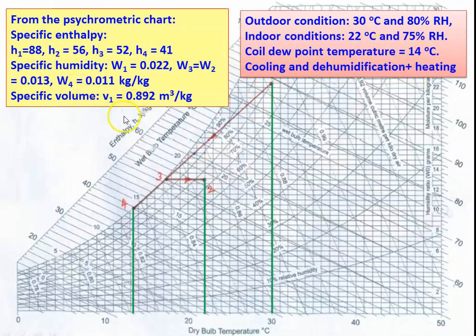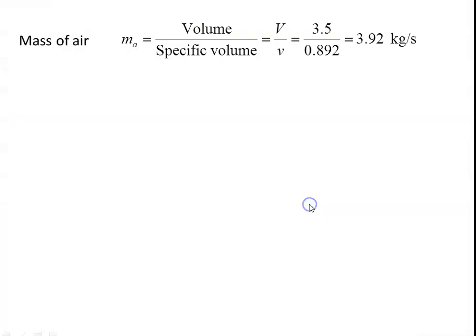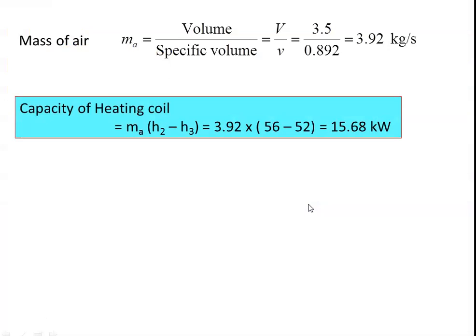Reading the values from the chart: h1 = 88, h2 = 56, h3 = 52, h4 = 41 kJ/kg. Specific humidity: w1 = 0.022, w2 = w3 = 0.013, w4 = 0.011 kg/kg of air. Specific volume of air v1 = 0.892 cubic meter per kg.